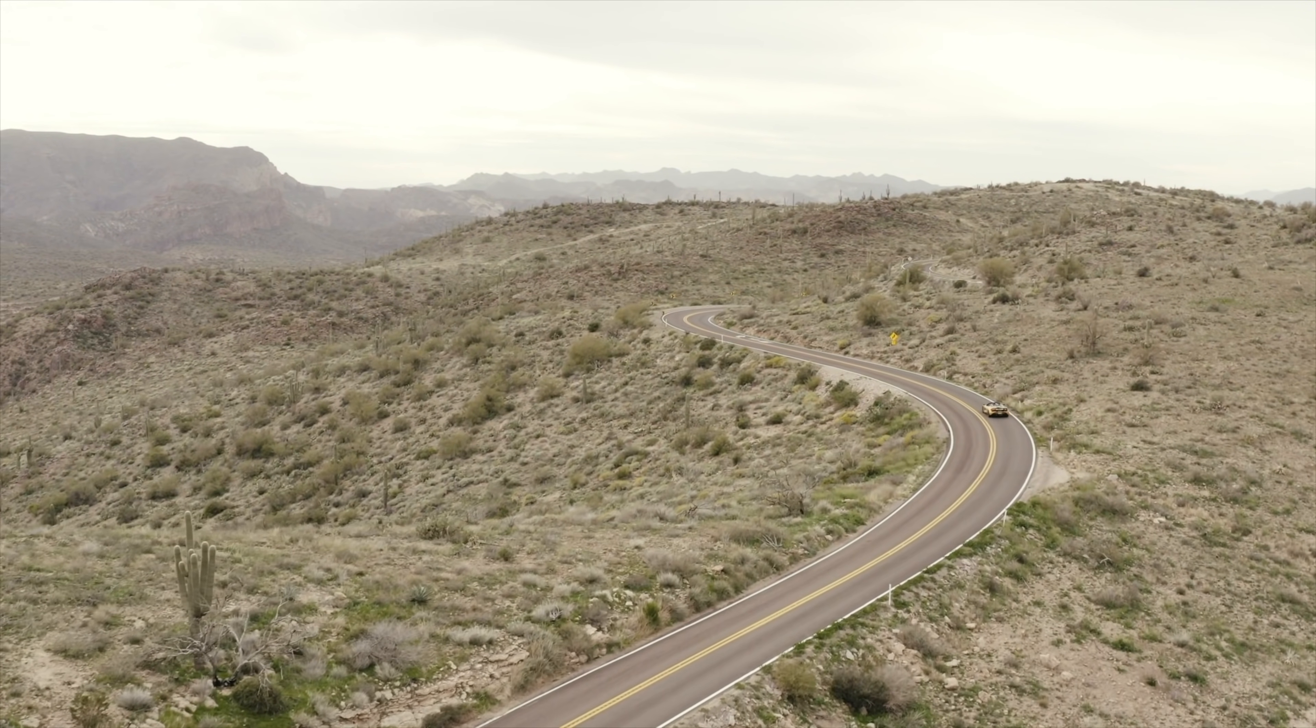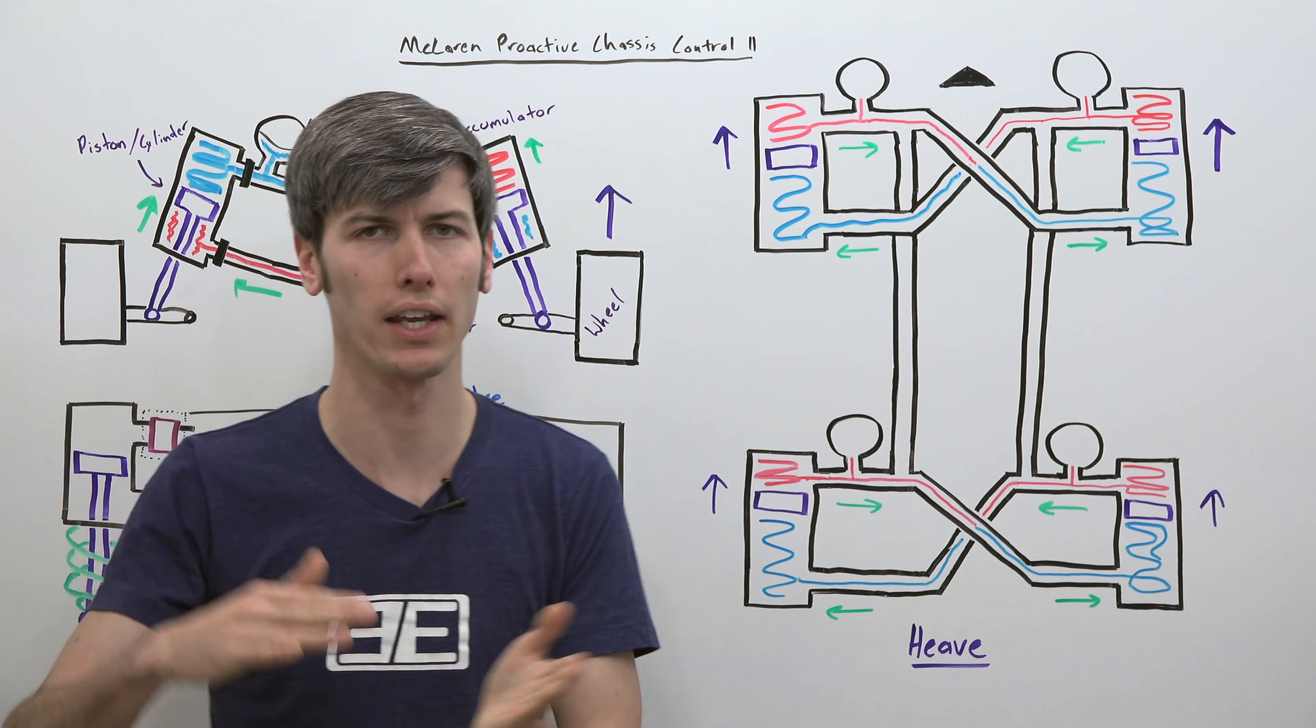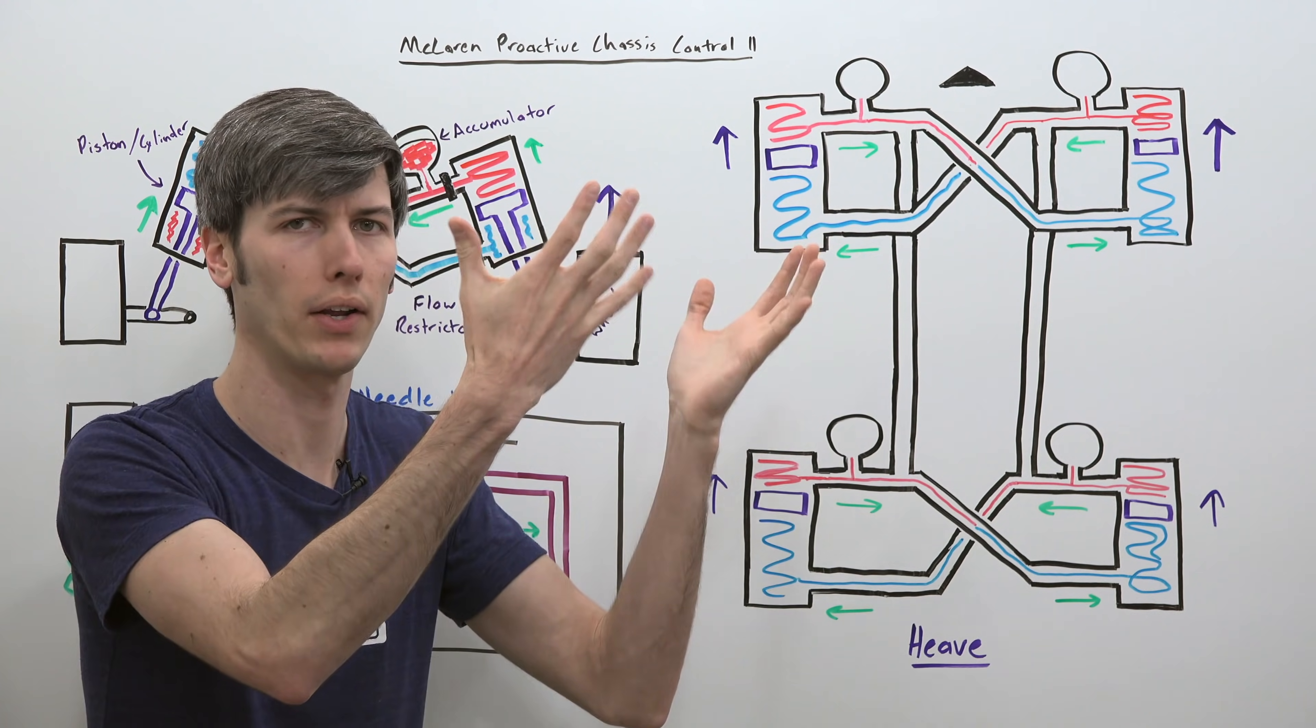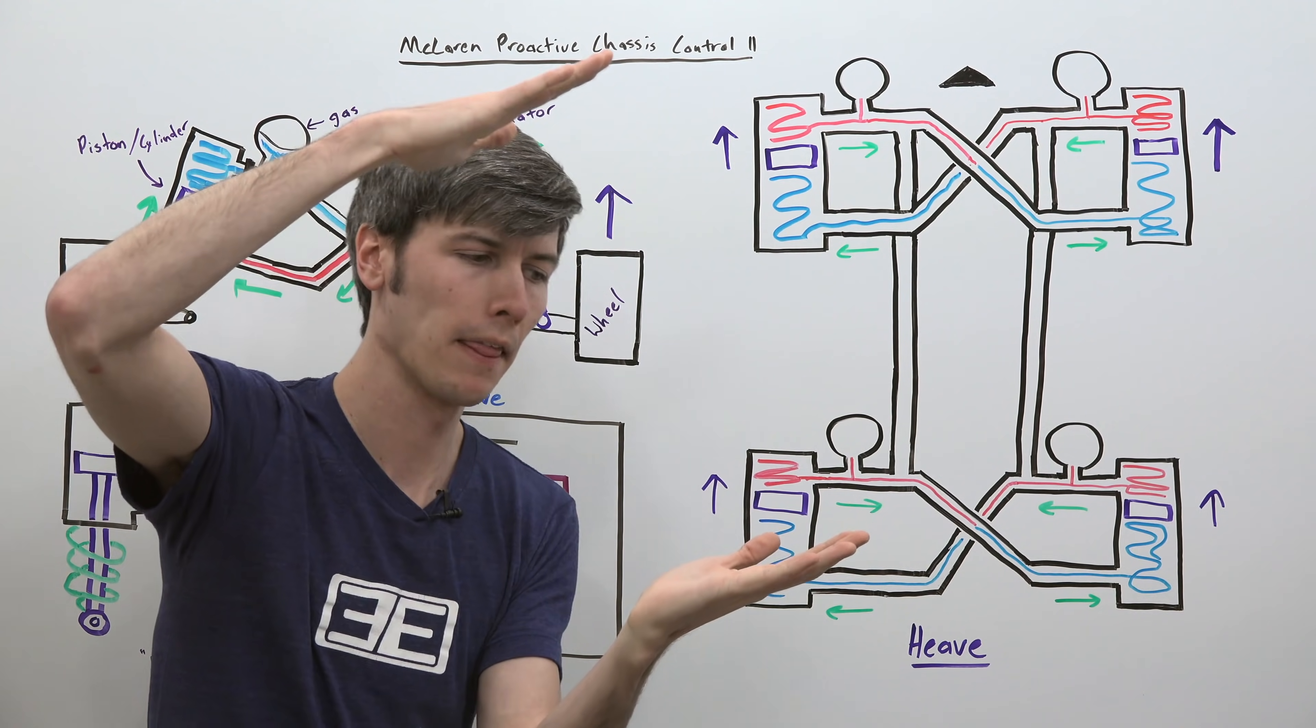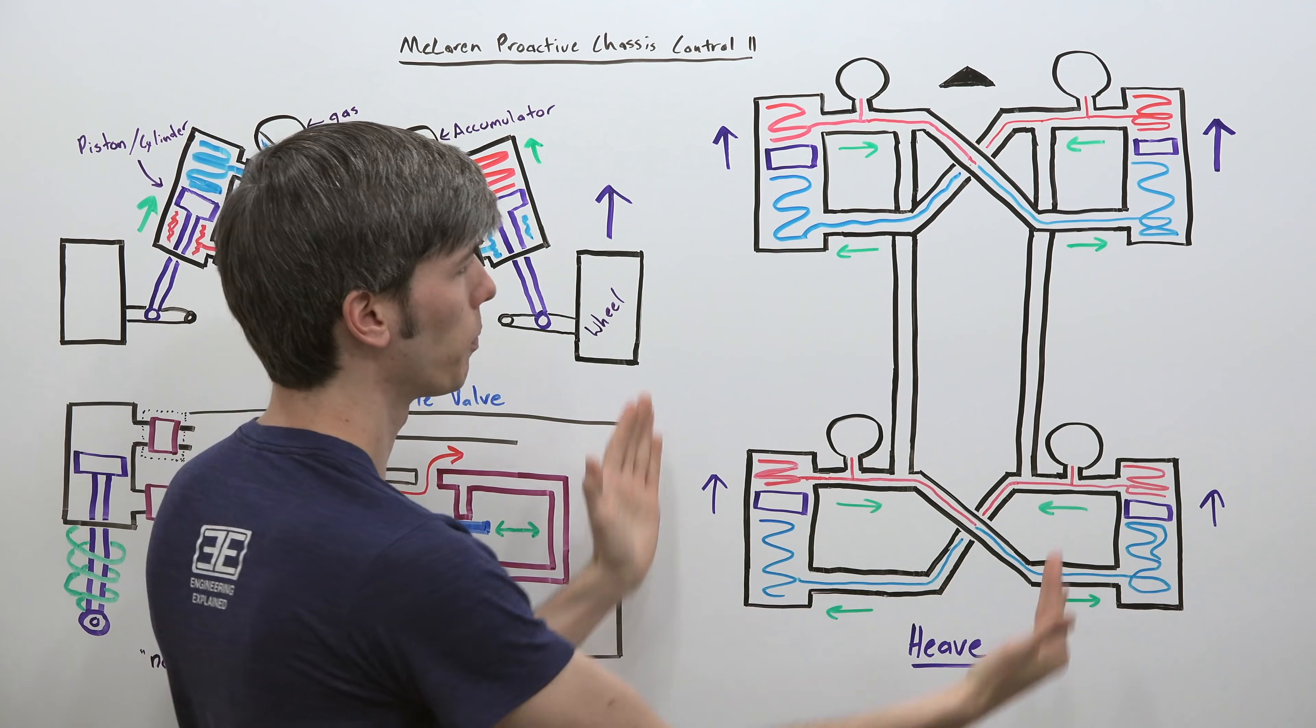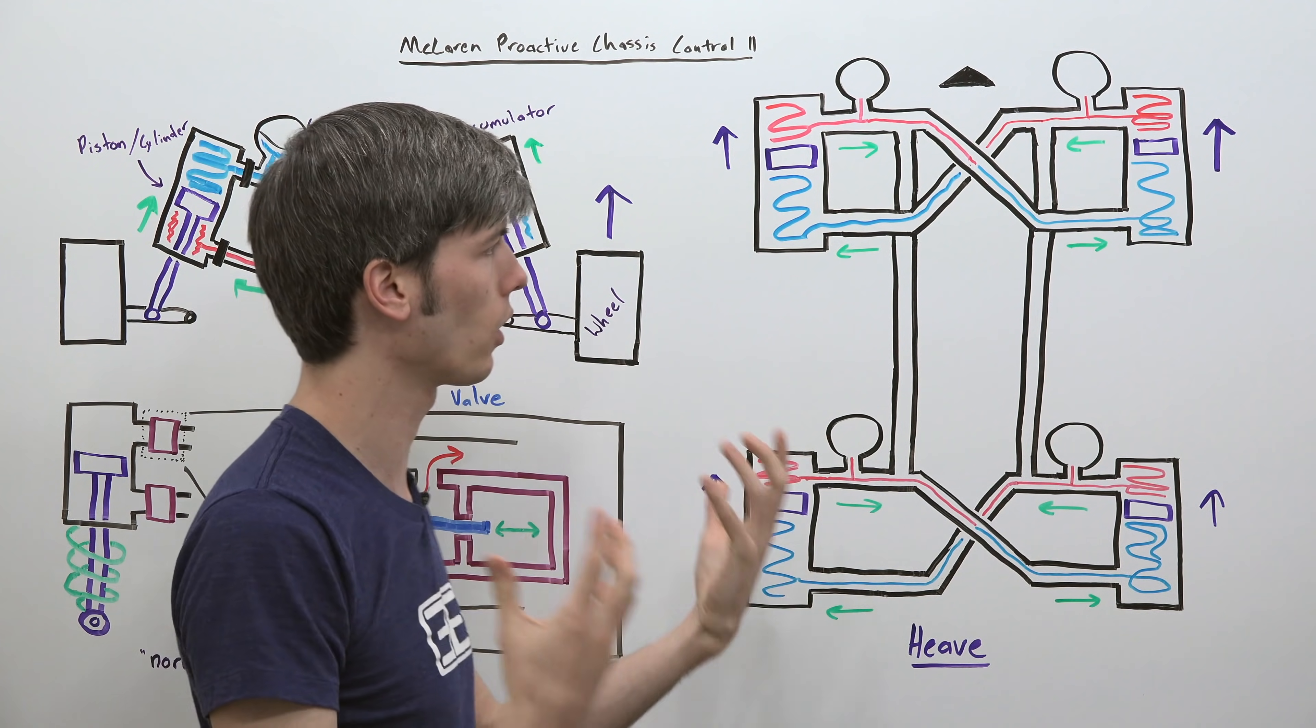Alright so our third scenario is heave and so heave is when the entire car is experiencing the same thing. So you're going over road undulations and all four wheels either want to compress in or extend out. So let's say you're coming down a hill really fast then you start to go up a hill, then of course that car wants to press down into the ground, all of those pistons are going to want to move up together and in this scenario you have a very low stiffness.